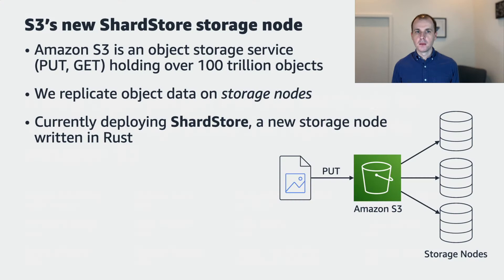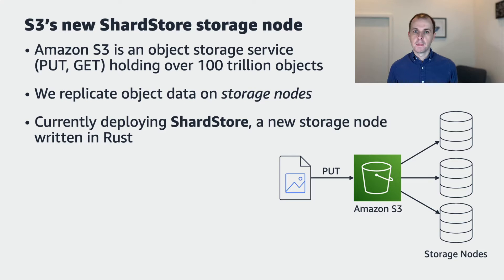Amazon S3 is a cloud object storage service holding over 100 trillion objects and offering customers a simple put and get interface to store and retrieve their data. Under the hood, S3 is a complex distributed system with more than 300 microservices. But today, we're going to focus on the service that stores customer object data. We do that by replicating object data across a fleet of what we call storage nodes, which are each single host key value stores.